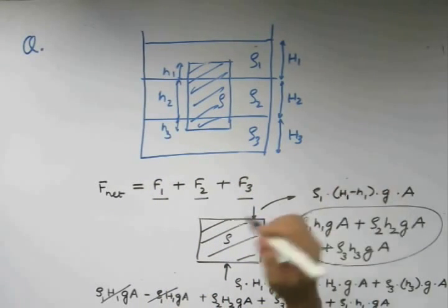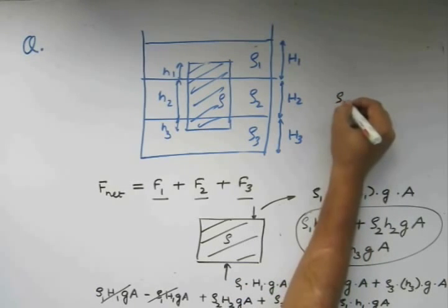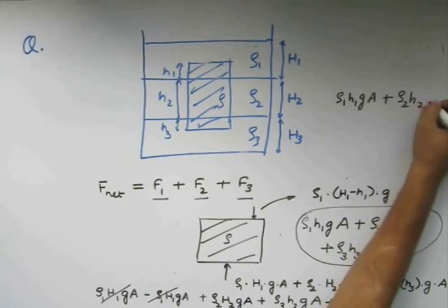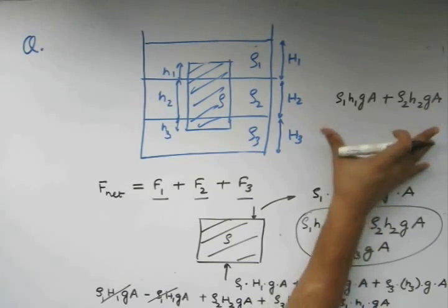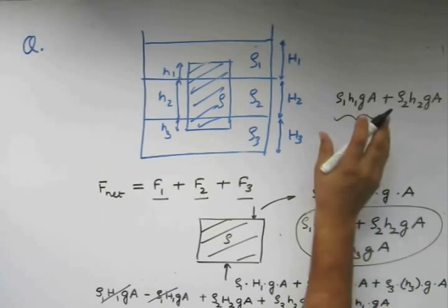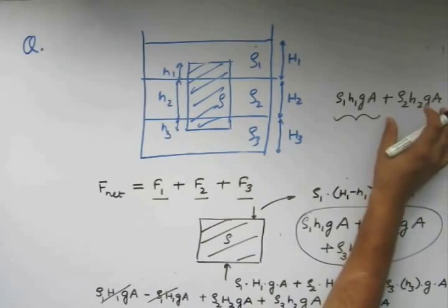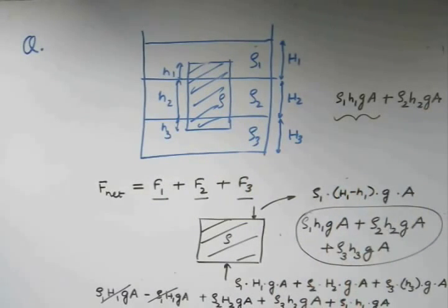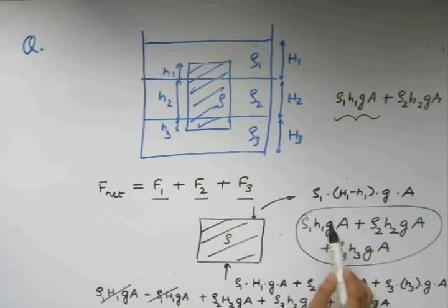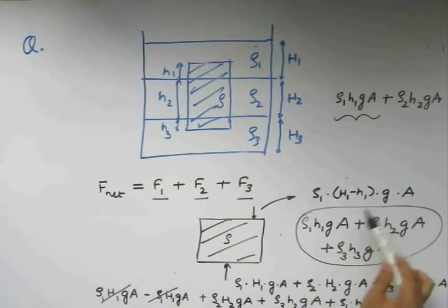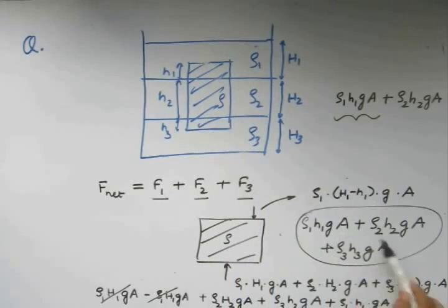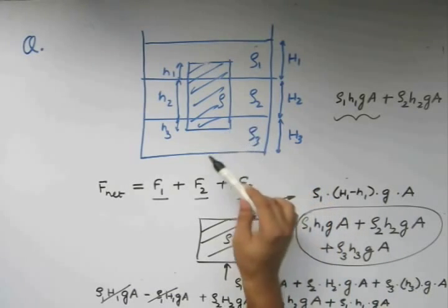Note that our previous expression was something of this format. This is what we got from the previous question. We said that this is the weight of the liquid displaced by the top portion of the body and this is the weight of the liquid displaced by the bottom portion. Same thing is applicable here. This is the weight displaced of liquid rho1 by this part of the body. This is the weight of liquid displaced by this part of the body of liquid rho2, and this is the weight displaced of liquid rho3 by this part of the body.